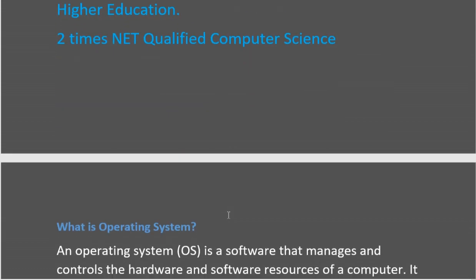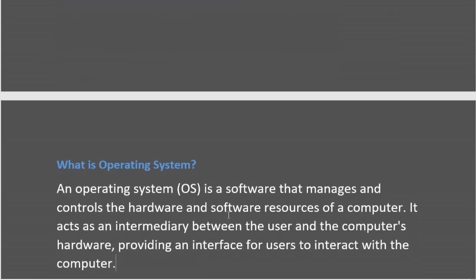What is an operating system? An operating system is a software. We have two types of software: system software and application software. Application software provides users the facility to do user-oriented tasks — like inserting text, listening to audio, watching a video, or surfing the internet. Examples of application software include browsers, MS Word, MS PowerPoint, and other application software.